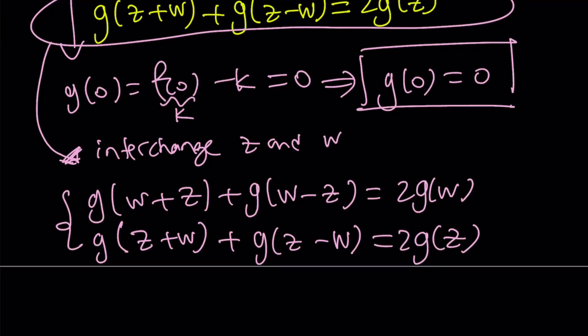Here's the thing: we have a lot of unknowns. If you just focus on the left hand side, I have g(w+z), g(w-z), and g(z-w). That's three unknowns, and I don't want to deal with three unknowns. So we're going to use the fact that g(0) = 0. Let's go ahead and use that.